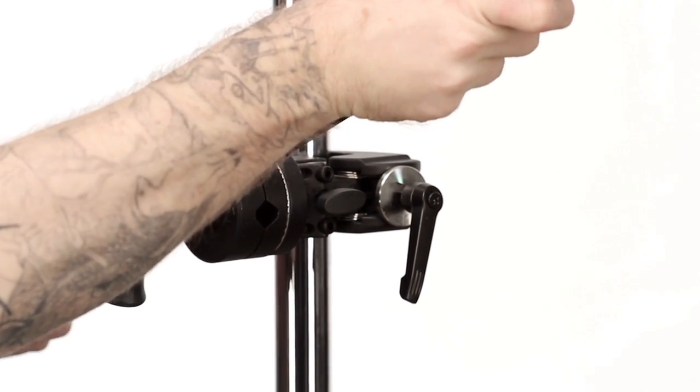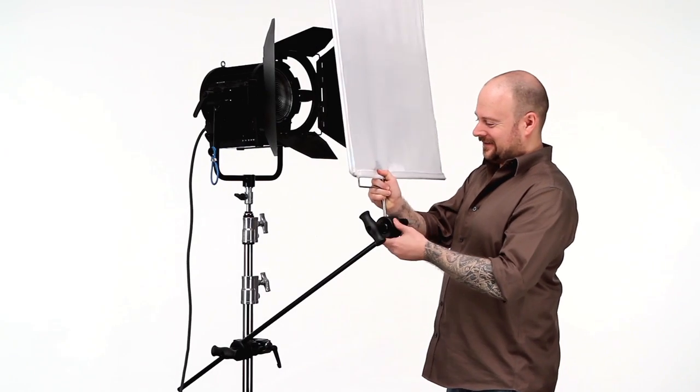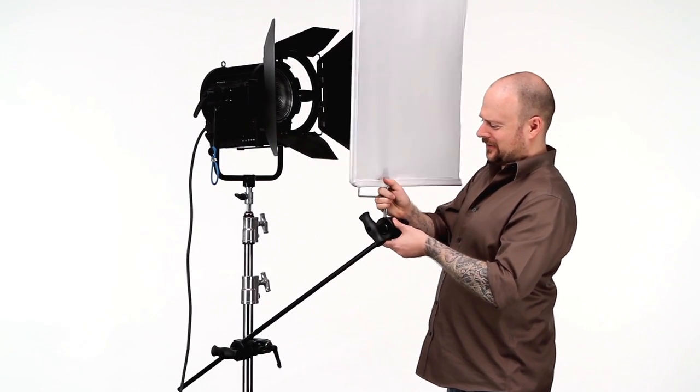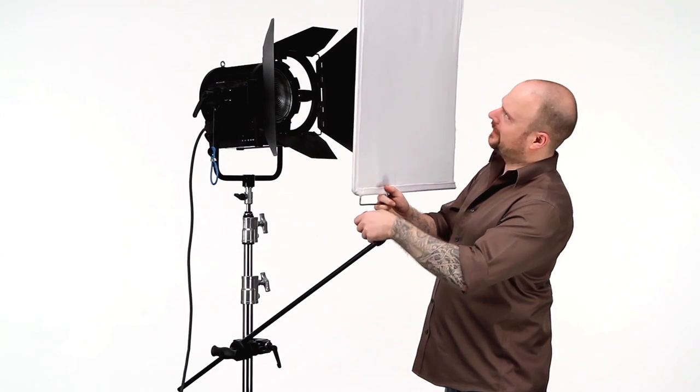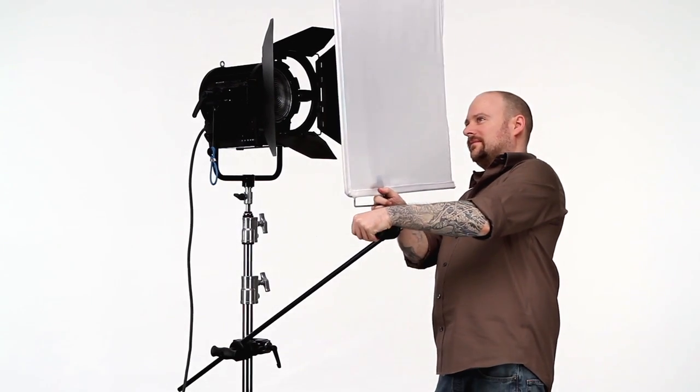Now that we have positioned our grip arm, just slide the 3 1/8 inch pin on the scrim frame into the corresponding V-shaped jaw on the grip arm. Position, then tighten the handle.